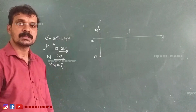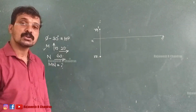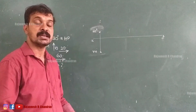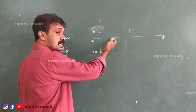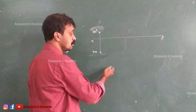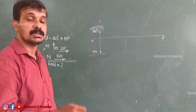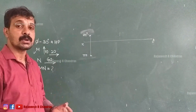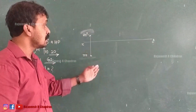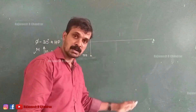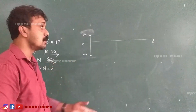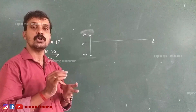Now, what about N? The point N is 60mm in front of VP. Being 60mm in front of VP means below the XY line at 60mm, and we can locate small n somewhere there. But where exactly do we locate N? At a distance of 60mm from the XY line in the downward direction, there are multiple possible points. We need the distance between the projectors through M and N, but that data is not given.